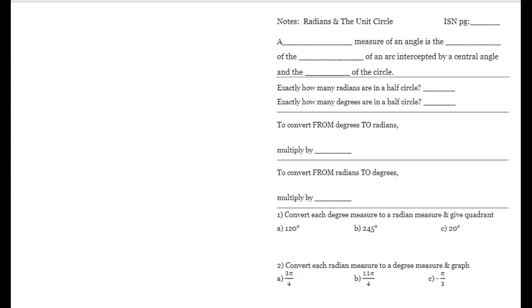So up until now, radians really hasn't appeared much in the geometry course with the exception of when we're doing trigonometry. When we're doing trigonometry and trying to get values using sine, cosine, and tangent, and we use Desmos or the graphing calculator, the default for those systems is measuring in radians. So what we've had to do is switch it into degree mode.